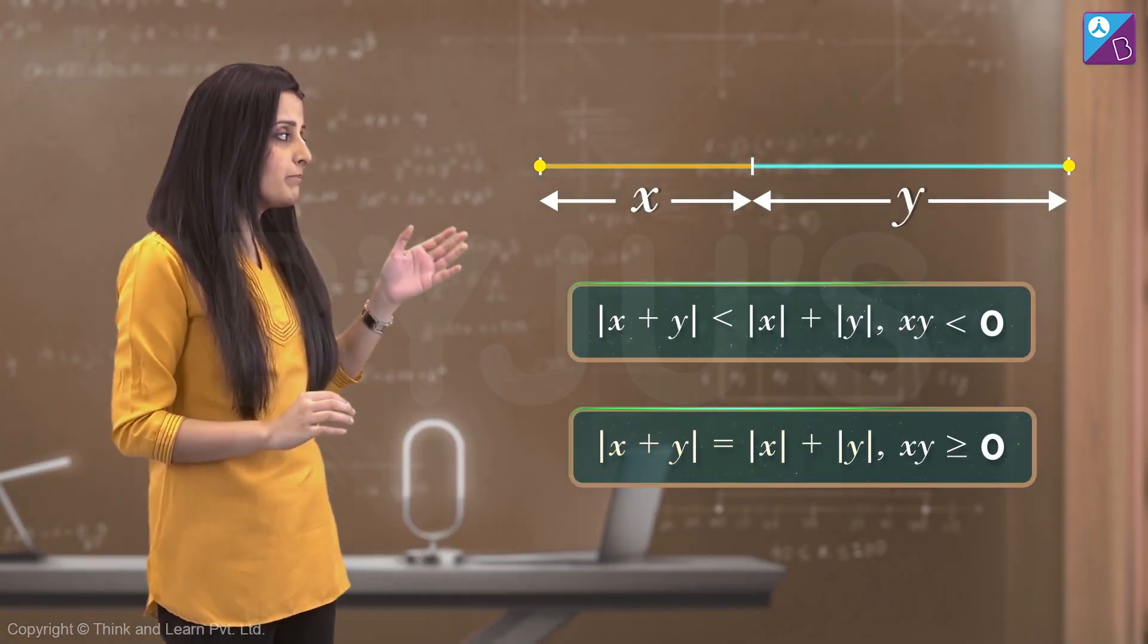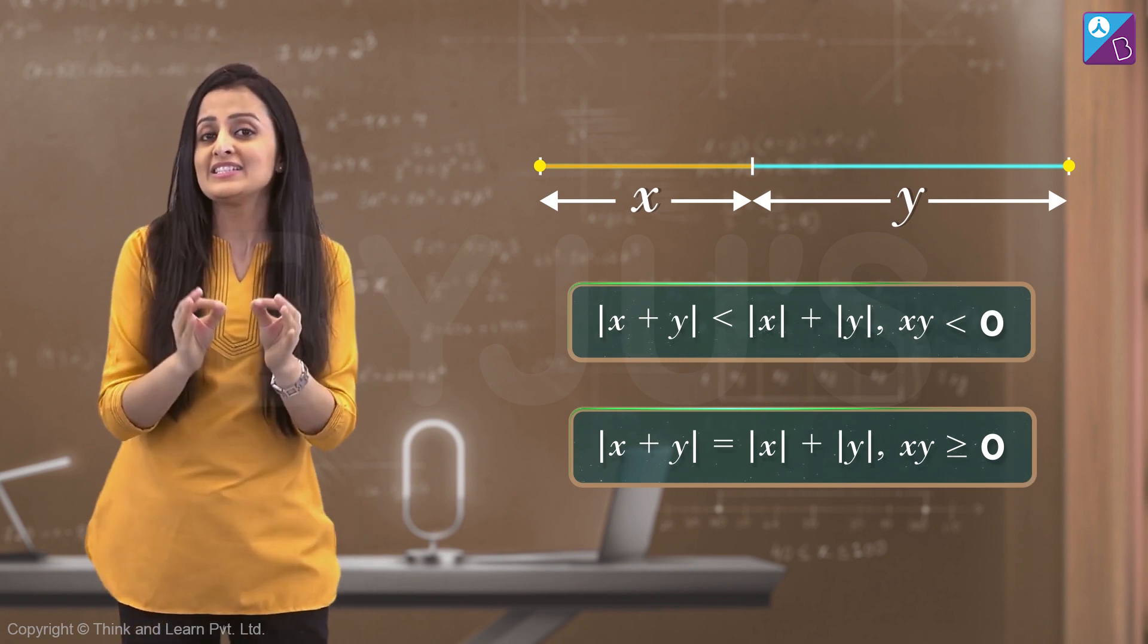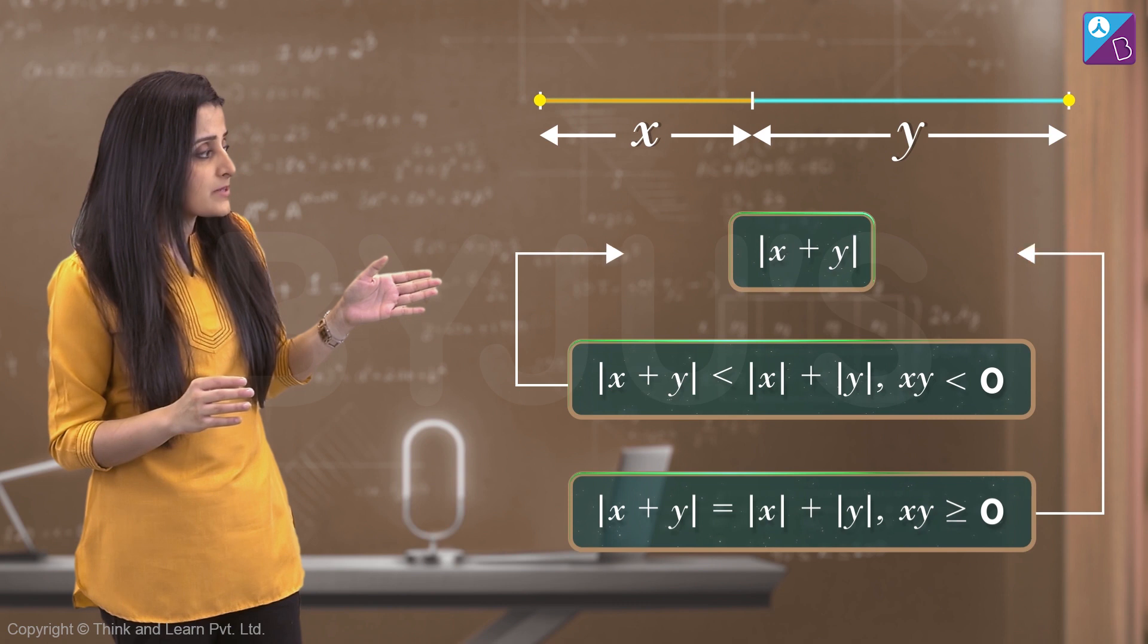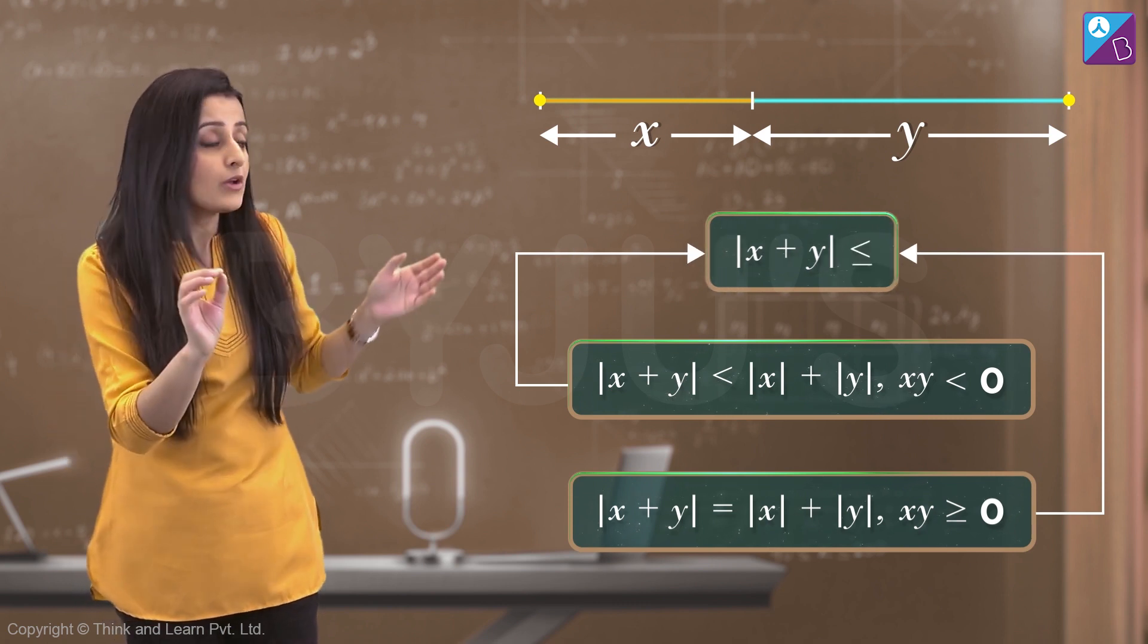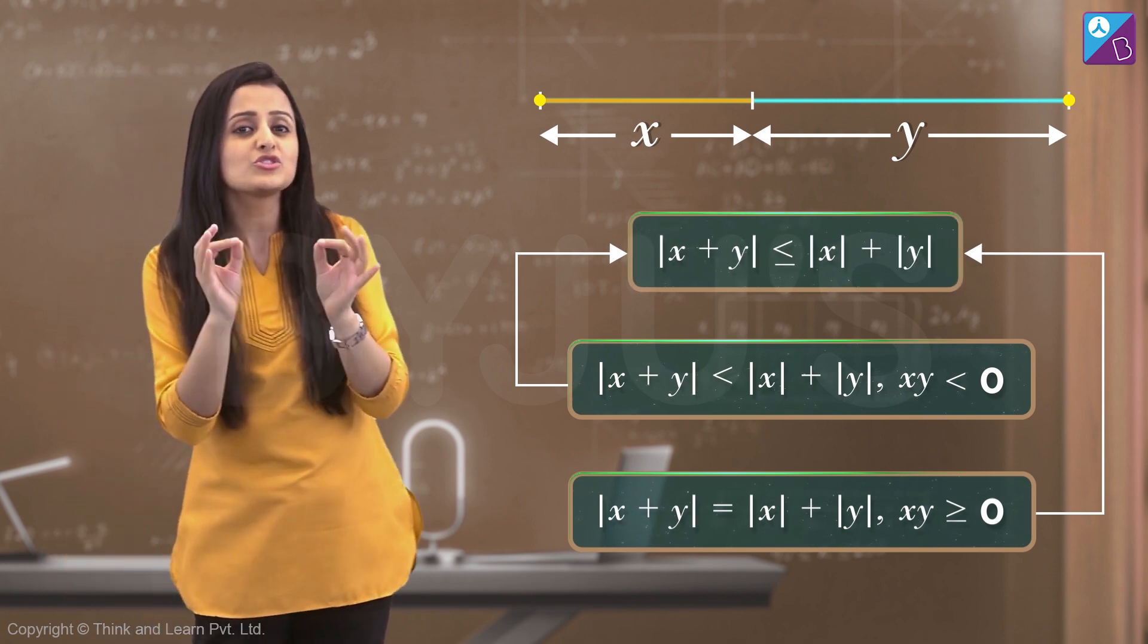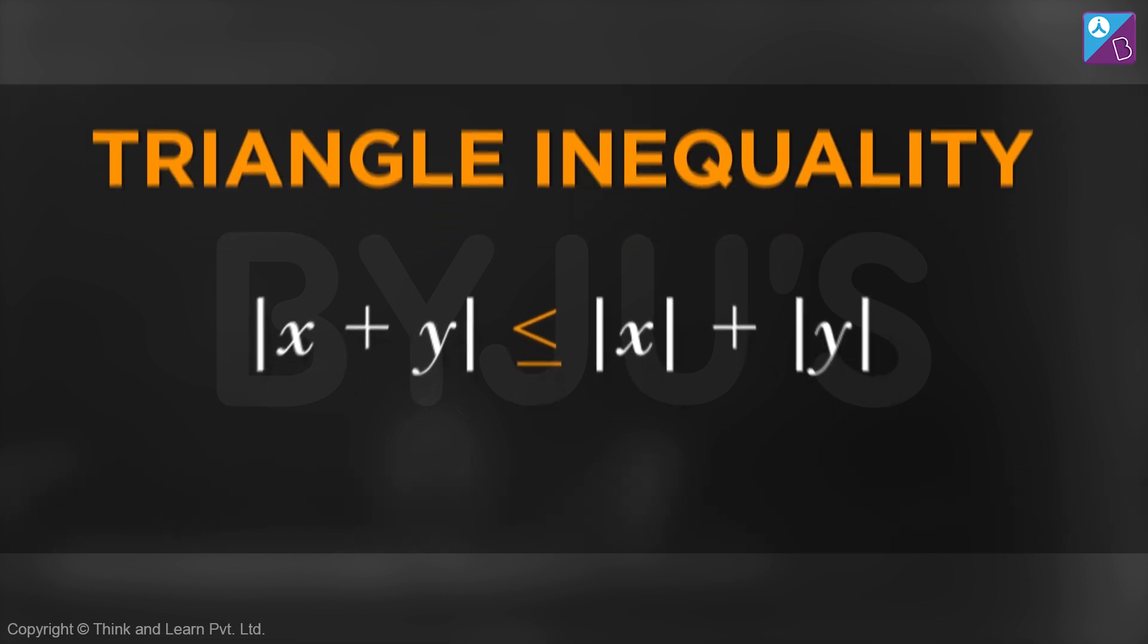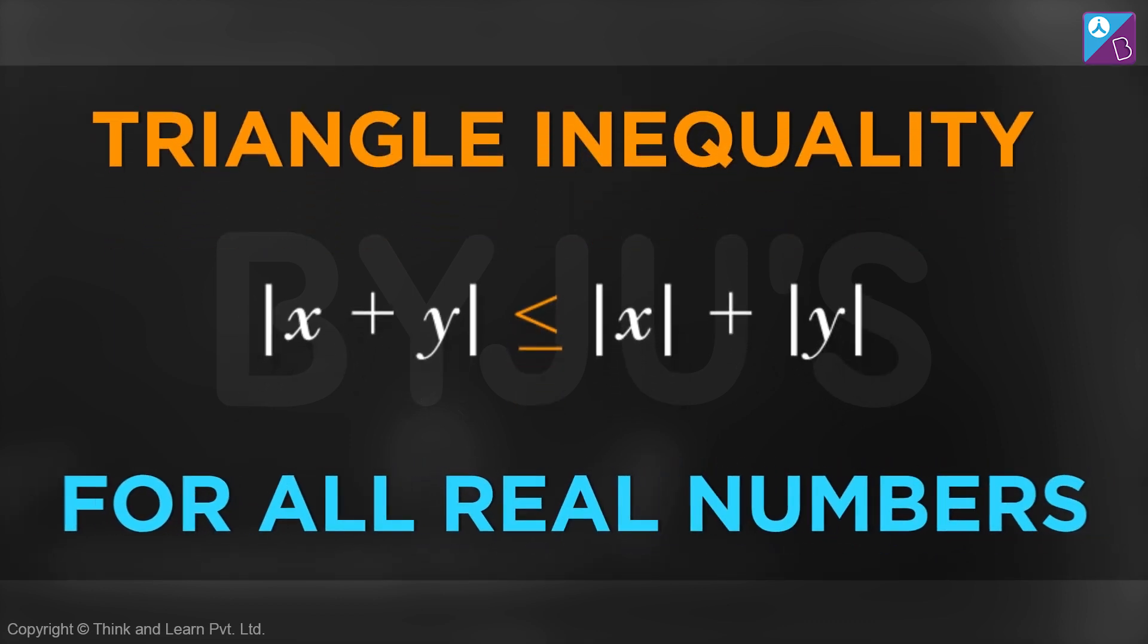After taking both the scenarios, now we can conclude that in general, mod of x plus y is less than or equal to mod of x plus mod of y, which is known as the triangle inequality. And this is true for all real numbers.